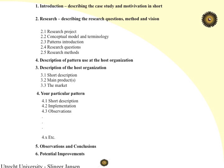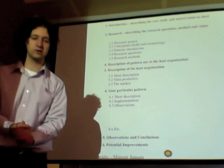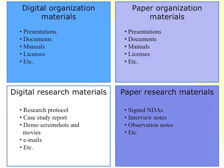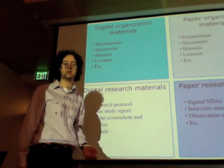I'll leave this for you to study — this is the layout for the case study report. We'll discuss just this section: here I have description of the host organization, and here your particular pattern — short description, implementation, observations, and so on. Here you could go through the different cross-cutting quality concerns like variability, performance, maintainability, and all the other quality concerns you know about. Here you see all the data I collected for my case study — digital versus paper, and organization versus research.